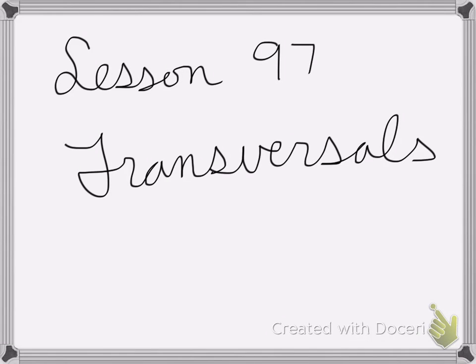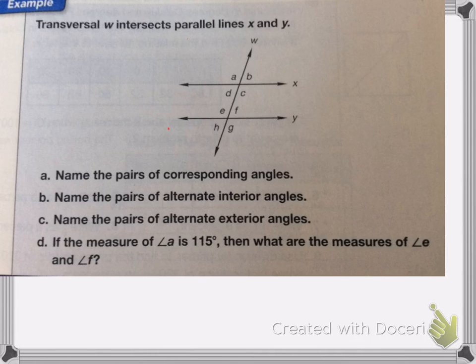Alright, so lesson 97 is on transversals. Here we have the transversal W intersects the parallel lines X and Y. Remember, the transversal is just a line that intersects two others.